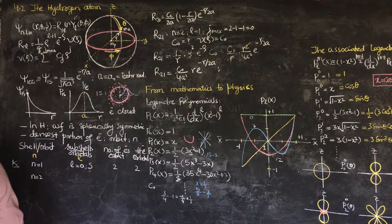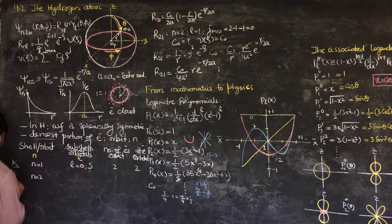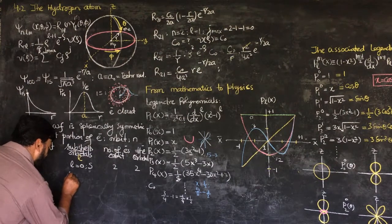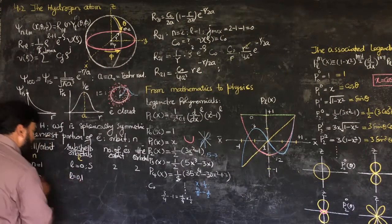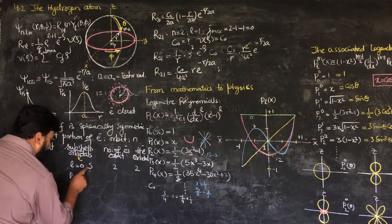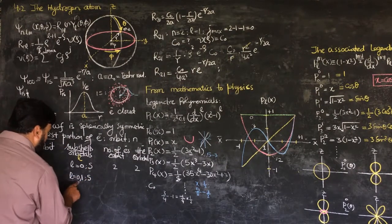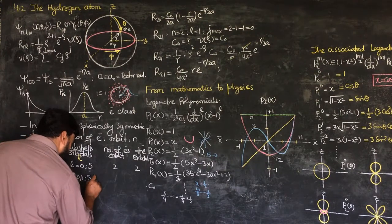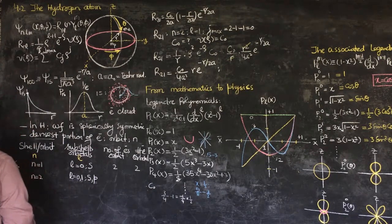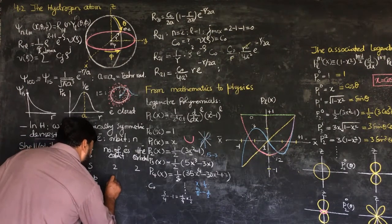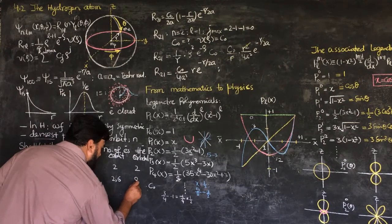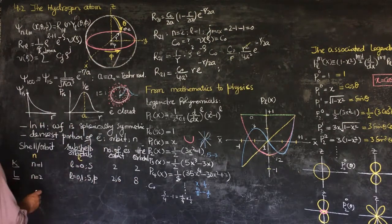When n is equal to 2, the principal quantum number is 2, we will call this the L shell. And here the possibility for l is that it can have values 0 and 1. We will call the 0 as usual as s-orbit, and the one we will call is p-orbit, p from principal. So now the number of electrons here in s are 2, while in p the number of electrons are 6, so the total numbers here is 8.